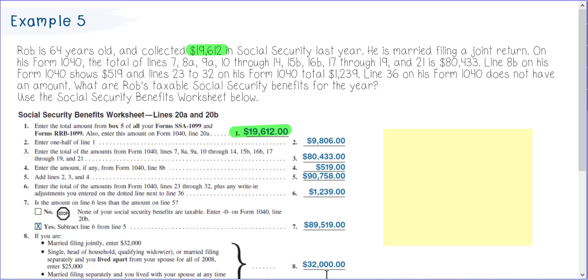He is married filing a joint return on his 1040. The total of lines 7, 8A, 9A, and 10 through 14, 15, 17, and 19 is $80,433.